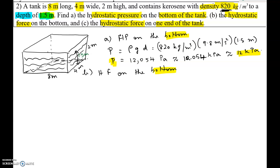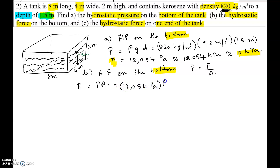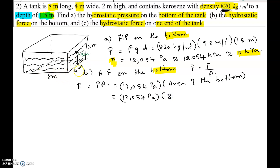For part b, recall from the concept video that pressure equals force divided by area — force per unit area. If you multiply both sides by A, you get force equals pressure multiplied by area. We are going to find the hydrostatic force on the bottom, which is pressure times area. The pressure we already found is 12,054 pascals, and the area of the bottom is a rectangle: 8 meters times 4 meters.